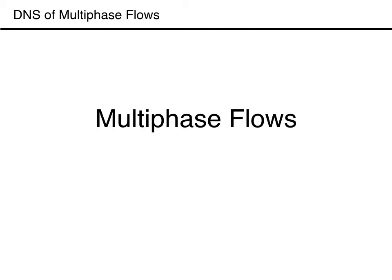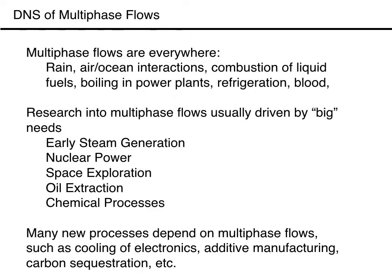Multiphase flows are everywhere, and understanding them is important for predicting the behavior of natural and industrial processes. Examples from nature include rain and the mass and heat exchanges between the atmosphere and the ocean, sandstorms, sedimentation, and various aspects of volcanic eruptions. Boiling heat transfer and chemical processing in bubble columns are ubiquitous in power and chemical plants. The combustion of liquid fuel always includes atomization, and sprays are found in painting, coating, cooling, irrigation, and a host of other applications.